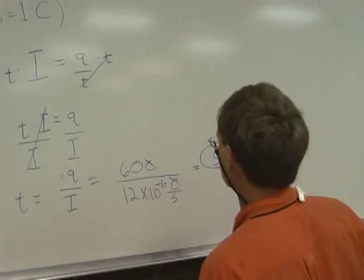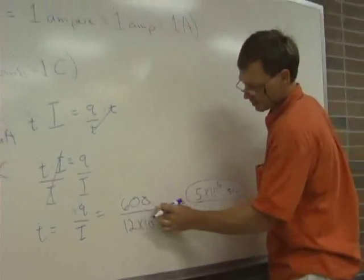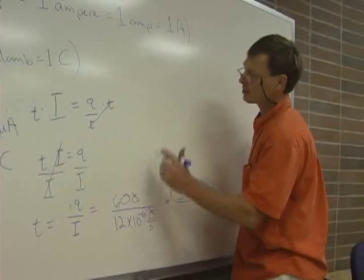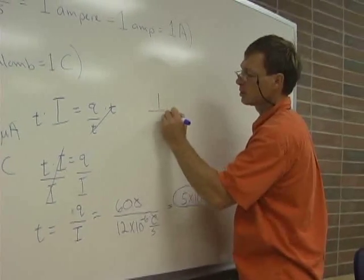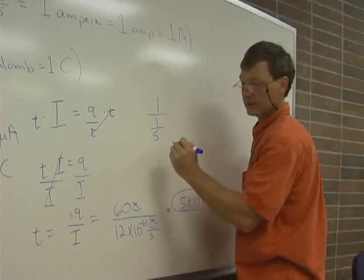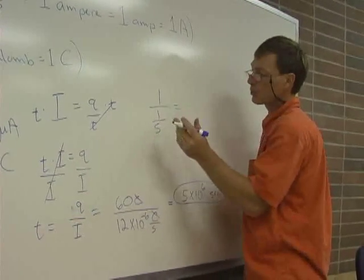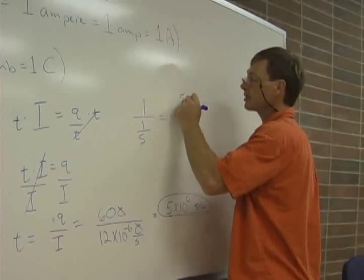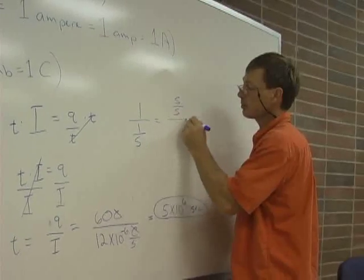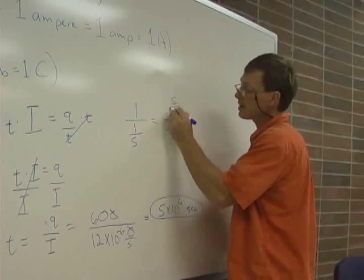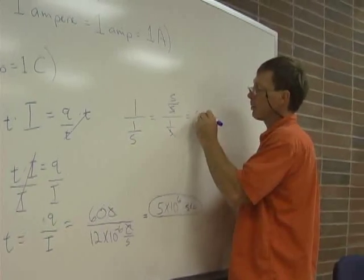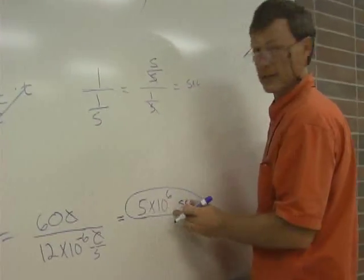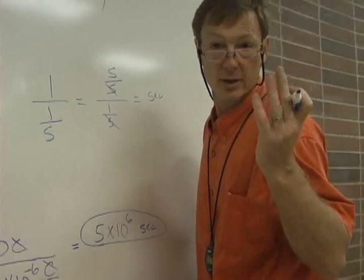One more thing. Let me show you how that seconds works, just in case you're not sure. I've got, you can see the coulombs cancel. They're both on top in the numerator and the denominator. But in the denominator, that seconds is on the bottom. So it's like 1 over 1 over seconds. And what I'll do is, there are a couple of ways to do this. But what I'll do is, I'll say, OK, that 1, I'm going to turn that on top into seconds over seconds, because that's 1. And the bottom, I've got 1 over seconds. And you see the denominators cancel. And that will wind up with seconds on top. So 1 over 1 over seconds is seconds. That's how I got that. Anyway, that's current.